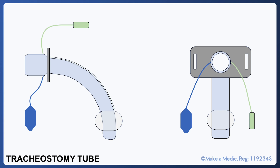Let's have a look at what a tracheostomy tube looks like — here we have side-on and front-on views. The tracheostomy tube has a cuff at the end which is designed to seal the trachea. This creates a closed circuit between the ventilator and the lungs so that pressure can be applied via the ventilator. It also helps prevent aspiration.